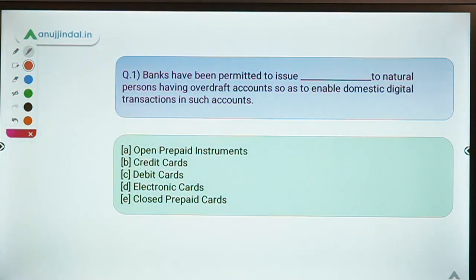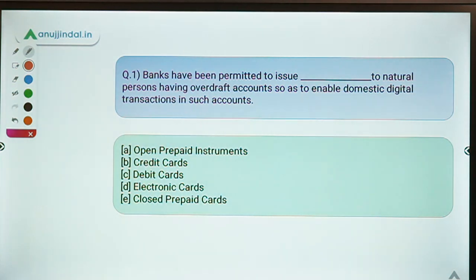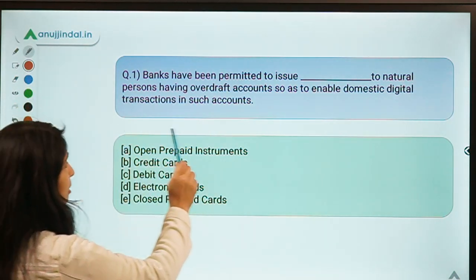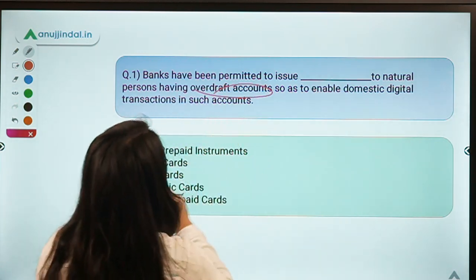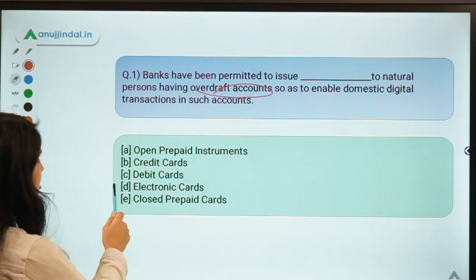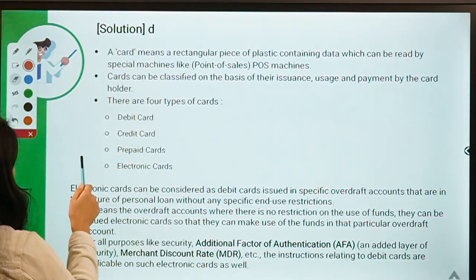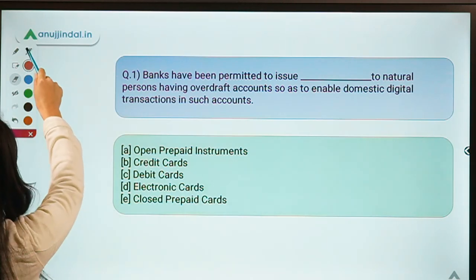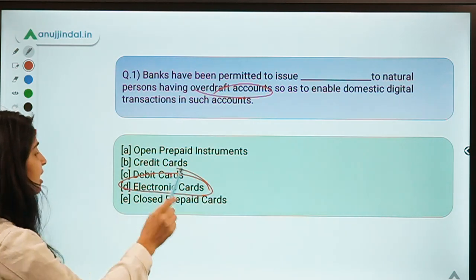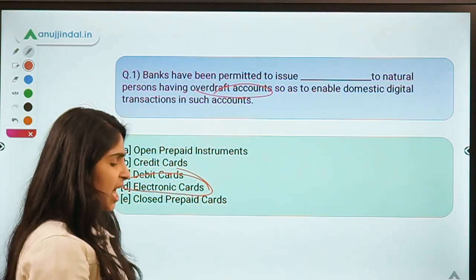Question number one says: banks have been permitted to issue dash to natural persons having overdraft accounts, so as to enable domestic digital transactions in such accounts. You have to take care that this question talks about cards related to overdraft accounts. The correct option for this question is electronic cards.